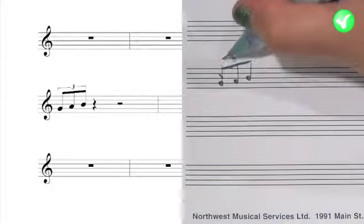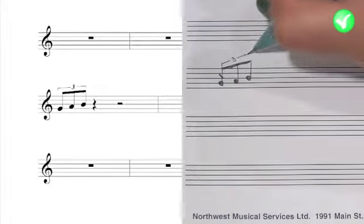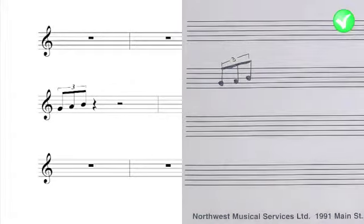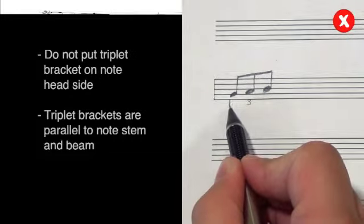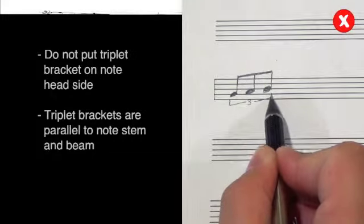When writing triplets, the three and the brackets go on the stem side, and the bracket angle should be the same as the beam angle. Our mistake here is that the triplet bracket is on the wrong side of the notes. Remember, it should always be on the stem side.